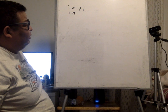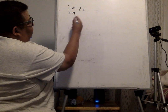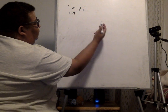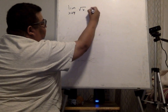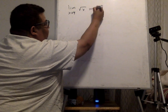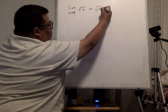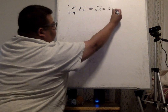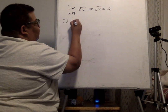So the limit as x approaches 4 of square root of x — we need to find L, the value of the limit. We plug in: square root of 4 is 2, so that's your L. The first step is L equals 2.